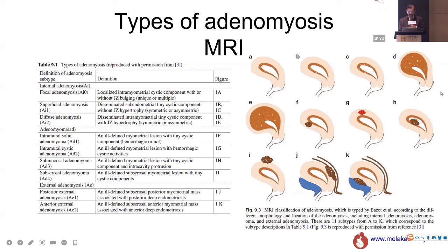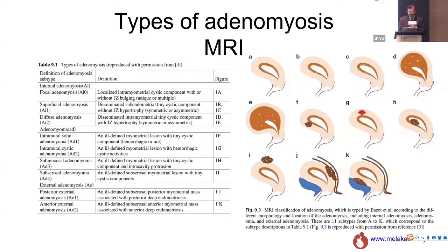Going back to the MRI classification: types A, B, C, D, E are internal adenomyosis, starting from inside and moving out into the myometrium. Adenomyomas can be intramural, submucous, or sub-serous. Then we have external adenomyosis, where it comes from the serosa and moves toward the endometrial cavity. Understanding these three different pathophysiological types is important because when doing HIFU, the disease response is different for each type.